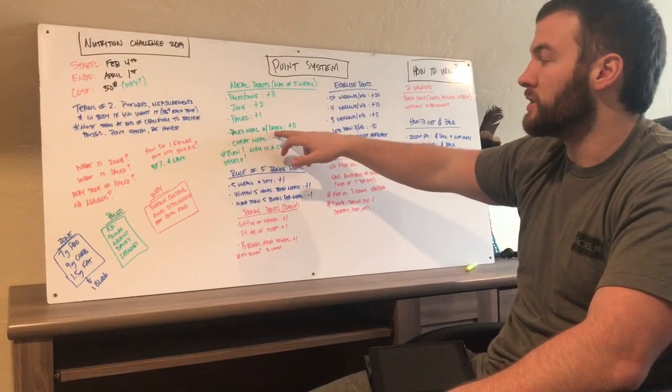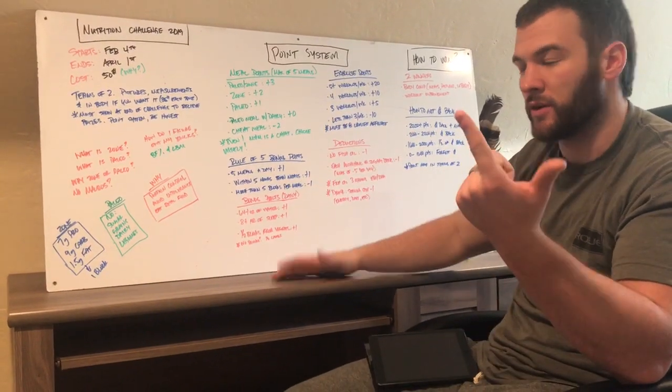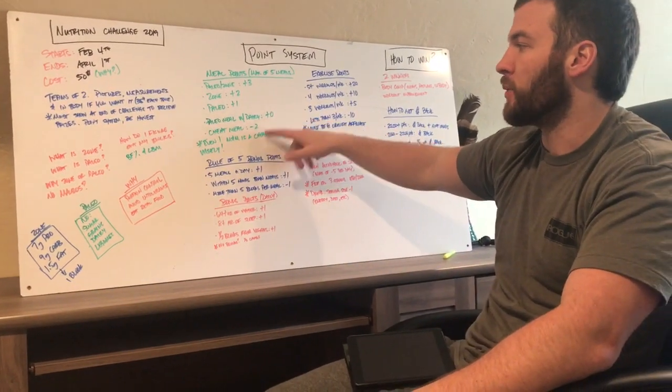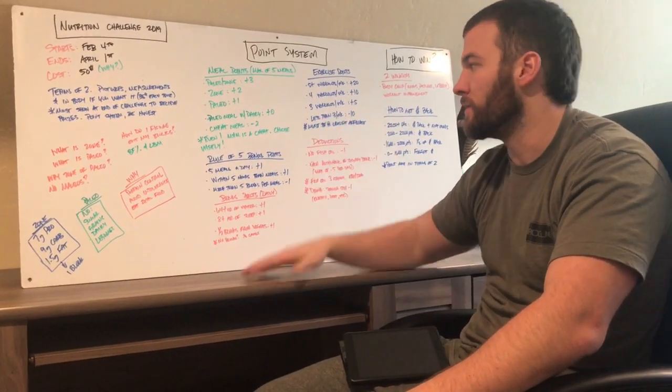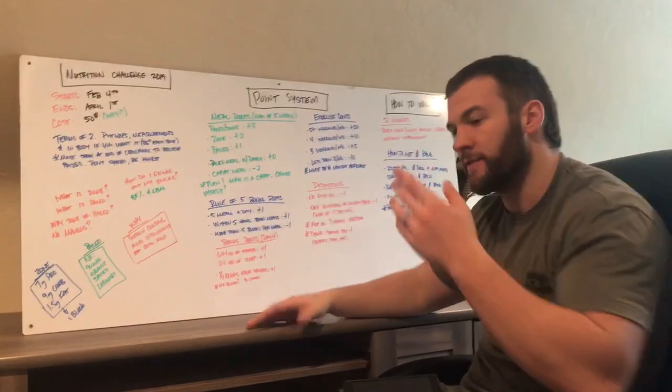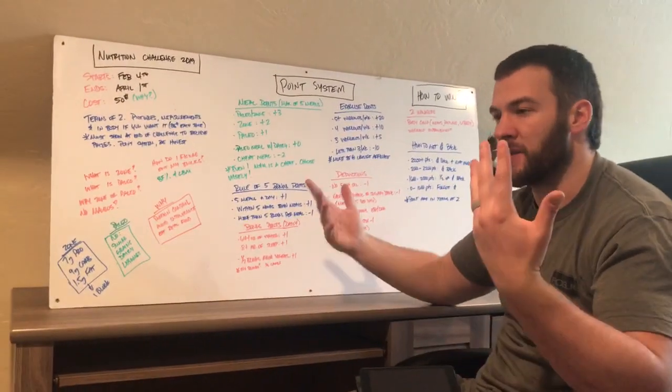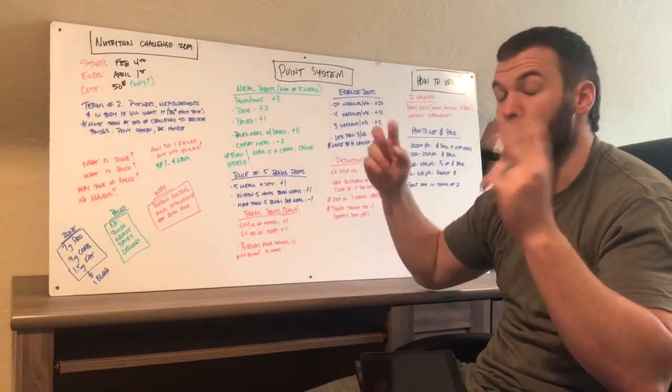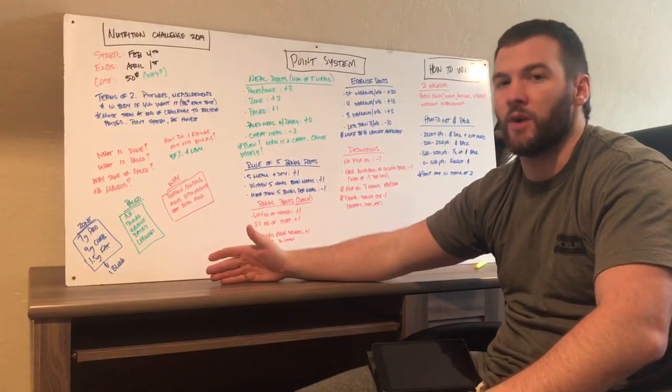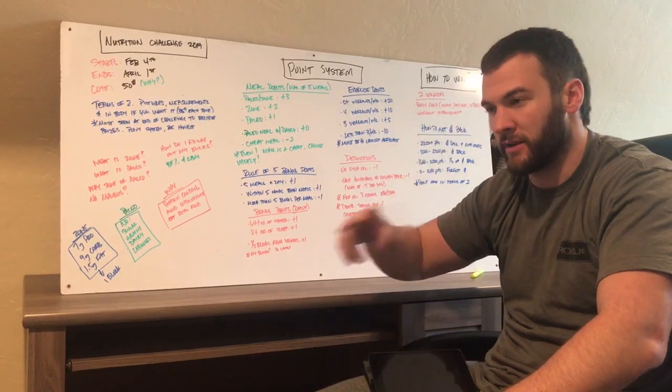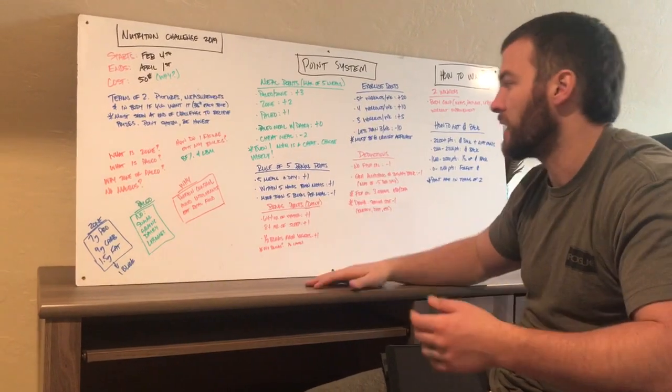If you do a paleo meal that includes dairy, which is cheese or milk, anything like that, then you just get zero points. And a cheat meal would be minus two. So even one M&M is a cheat meal. And you know what a cheat meal is. If I have, if I order pizza, as many pizzas I can eat in that meal is good. If I eat pizza at six o'clock and then I have pizza at nine o'clock, no, it's not one cheat meal. That would be two separate cheat meals because it's two separate meals. So just be honest with yourself there.